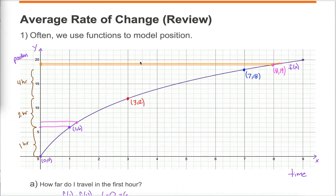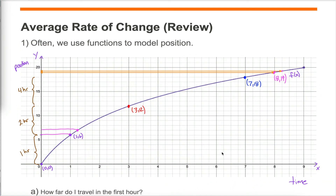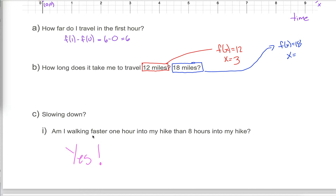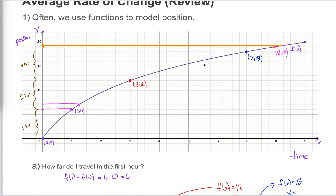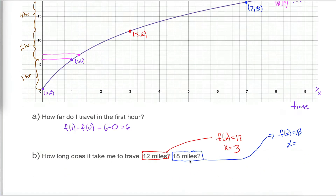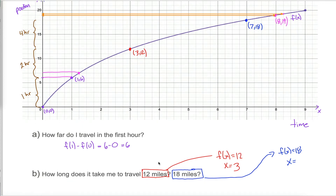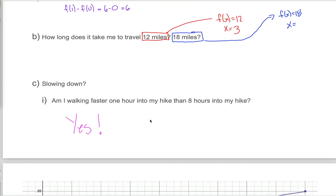In the last video, I spent a lot of time on a hiking example where we're modeling position as a function of time — keeping track of how far I go after a certain number of hours. I spent a lot of that video talking about instantaneous speed, something I really couldn't answer. The big takeaway was that instantaneous speed — speed at a given instant — is really, really hard in math. That's the bad news.